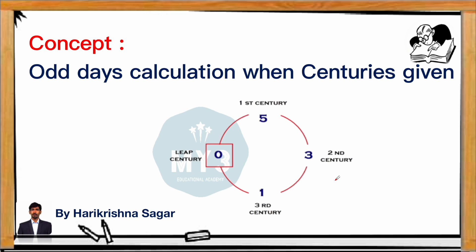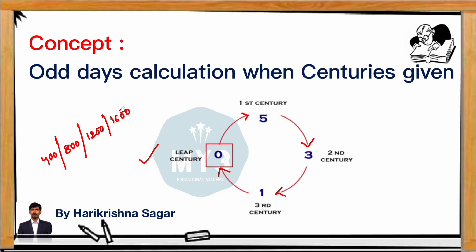For centuries also, we have odd days. To remember, use this cycle: every leap century has 0 odd days. The 1st century after a leap century has 5 odd days. The 2nd century has 3 odd days. The 3rd century has 1 odd day. Then the next leap century has 0 odd days again, and the cycle repeats. A leap century is any century that is a multiple of 400 — so 400, 800, 1200, 1600 are all leap centuries. After a leap century, the immediate next century is treated as the 1st century, then 2nd, 3rd, then again a leap century.